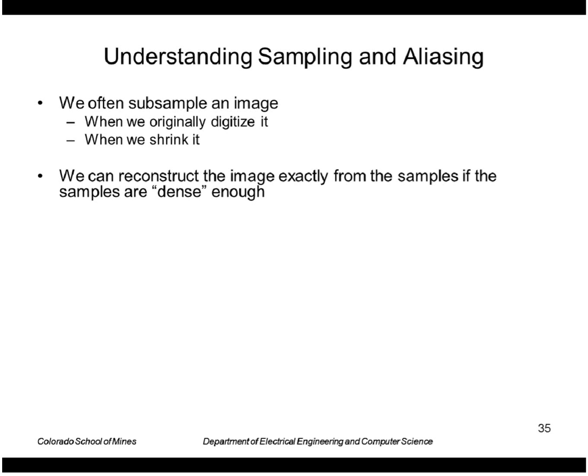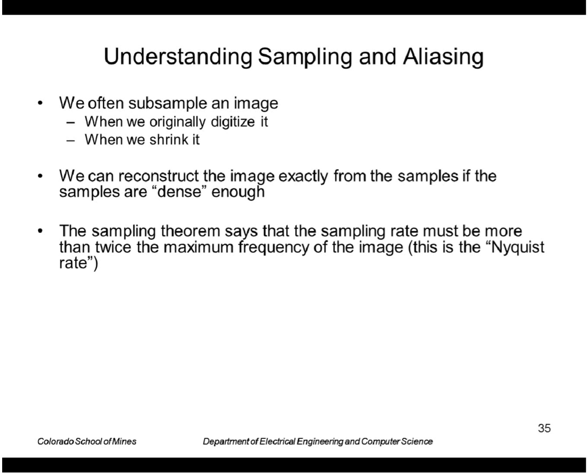We can reconstruct the image exactly from the samples if the samples are dense enough. This means from the sampling theorem, the sampling rate must be more than twice the maximum frequency of the image, which is the Nyquist rate.